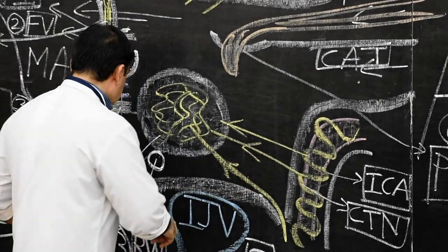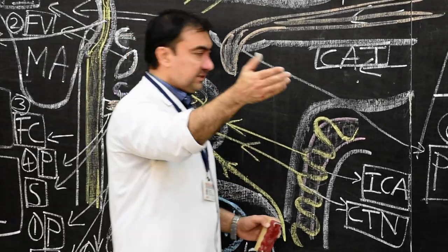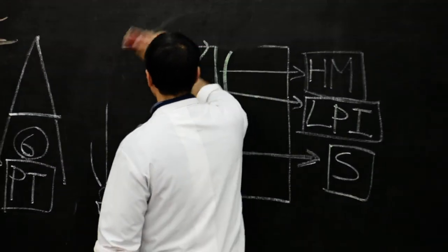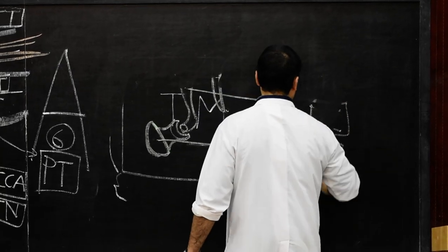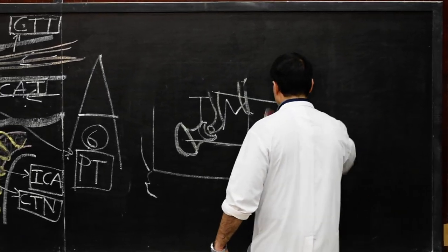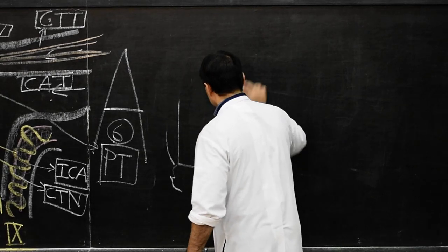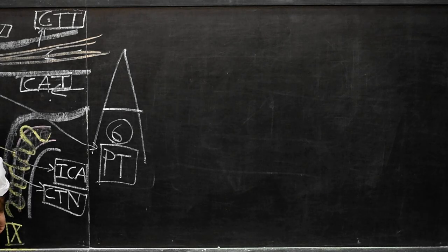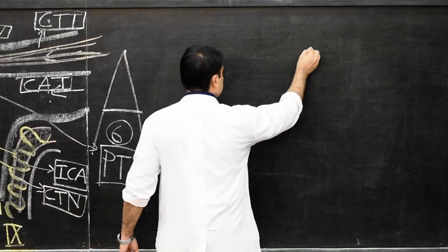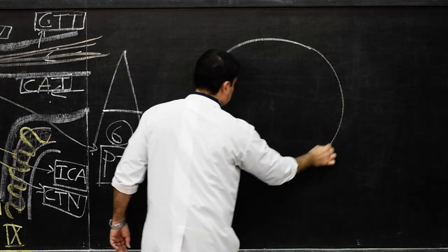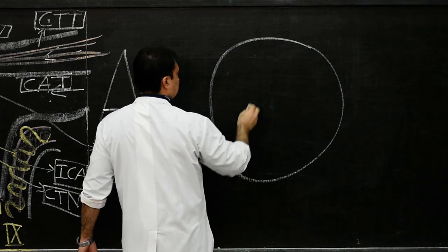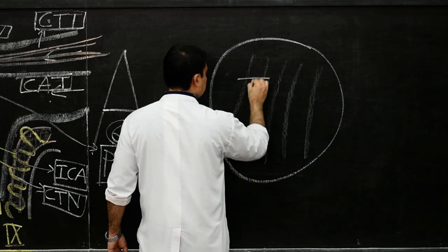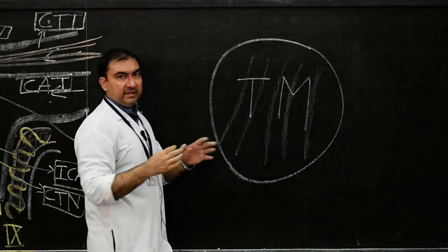Now the last wall is the lateral wall. The lateral wall will be consisting of the tympanic membrane. So we have to draw a rough representation of the tympanic membrane. Let us consider this as the tympanic membrane — I will write here 'tympanic membrane.' This is the lateral wall itself.